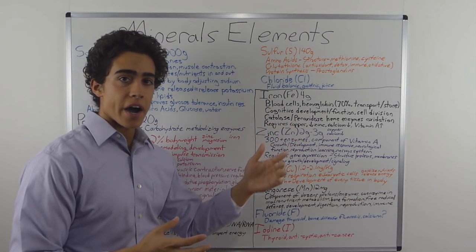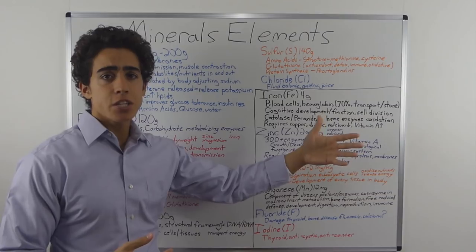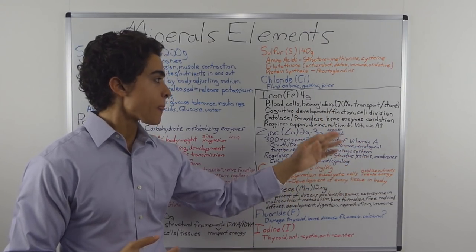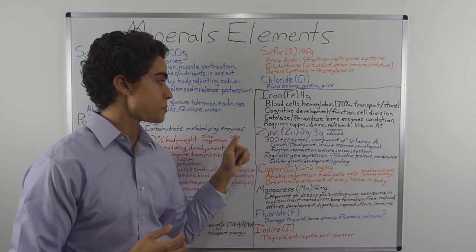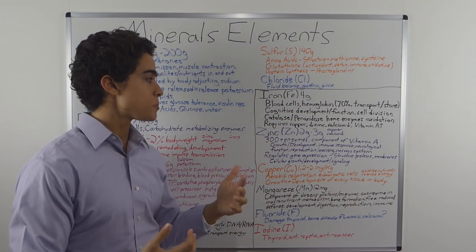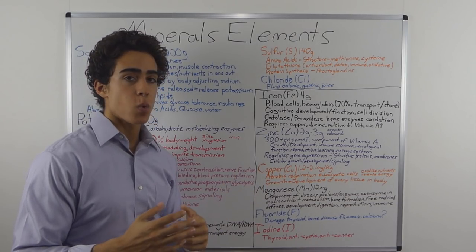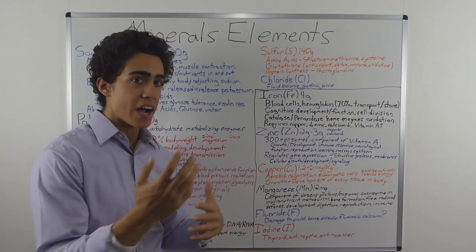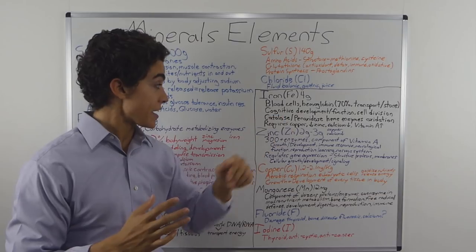Moving on to the elements, first we have iron, and there are four grams of iron in our bodies. Iron is chiefly for the transport and storage of oxygen. That's why 70% of it is contained in the hemoglobin of our blood cells. Iron is also important for cognitive development and function and cell division. This is why we see vegans out of breath, lacking mental function. They need iron.